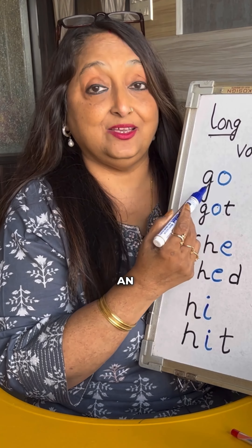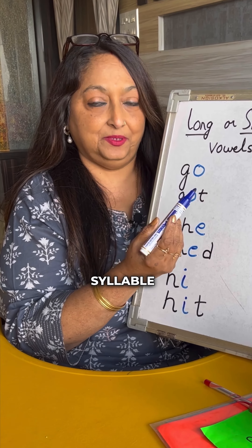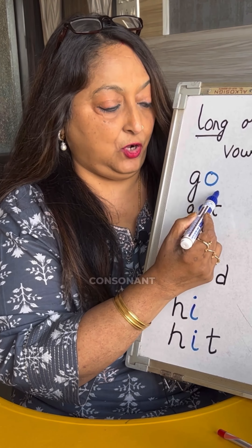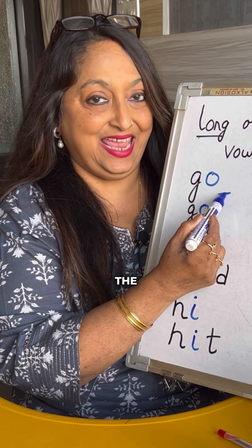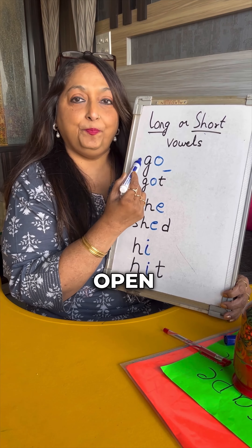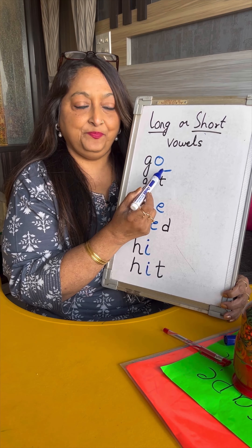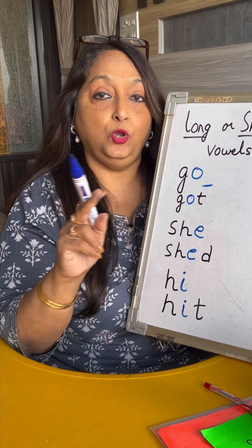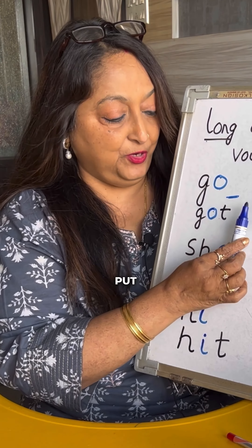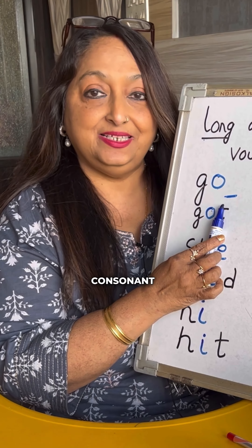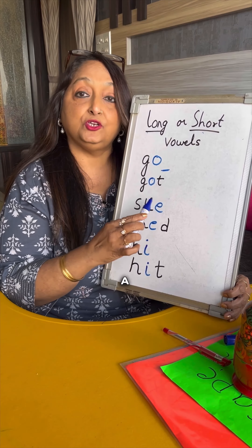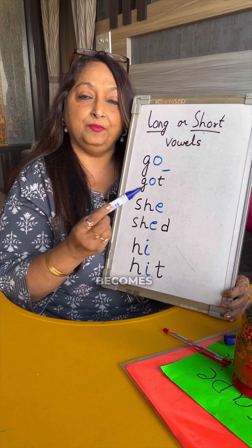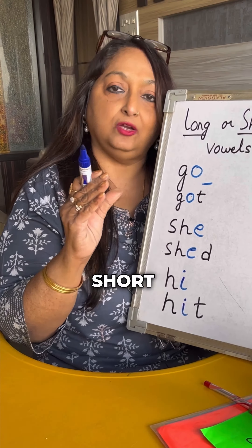When a word is an open syllable — now what's an open syllable? It does not have a consonant at the end. So if it's an open syllable, the sound of the vowel is long. But when you put a consonant at the end, it becomes a closed syllable and the sound becomes short.